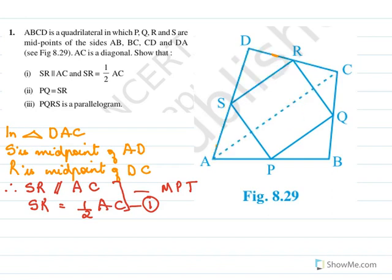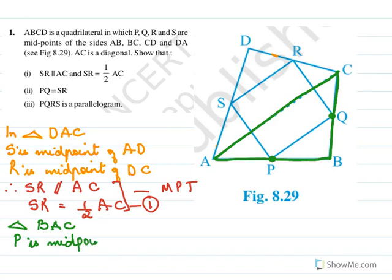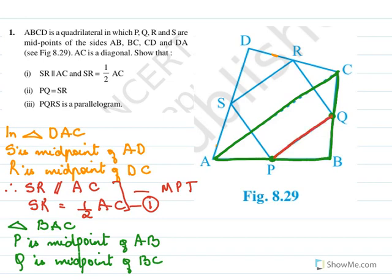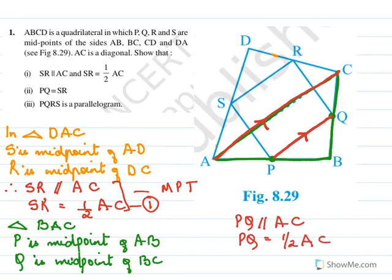Now we go to the other side and take triangle ABC. Here Q is a midpoint and P is a midpoint. In triangle ABC, P is the midpoint of AB and Q is the midpoint of BC. Two midpoints are given, so by the midpoint theorem: PQ is parallel to AC and PQ is half of AC. We write this as equation 2.